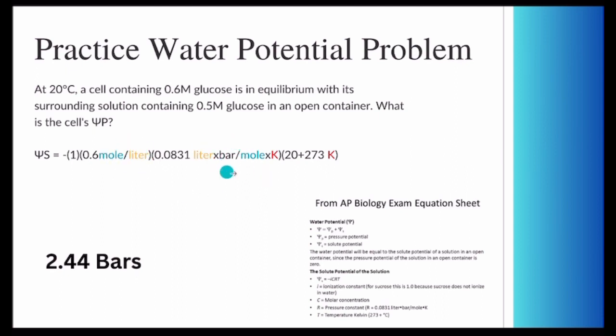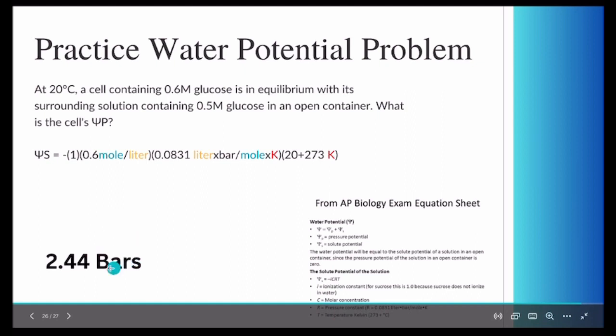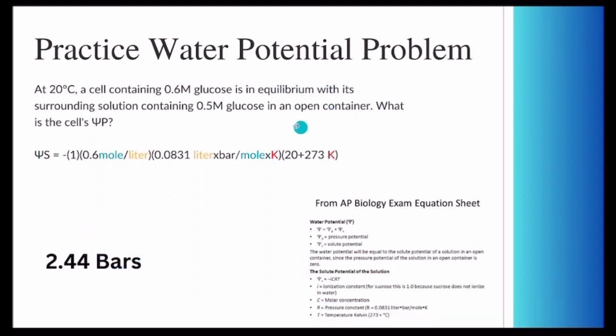Once you substitute all these in and you multiply them all together, you get the answer of 2.44. These units cancel out each other. As you can see here, these cancel out each other. And this is the only one that is not canceled out by anything. So our answer is in the units of bars. And because it's an open container, it has no pressure potential. So this would also be its water potential.